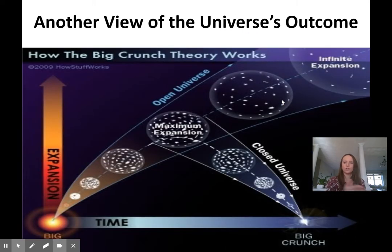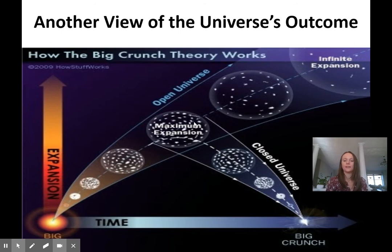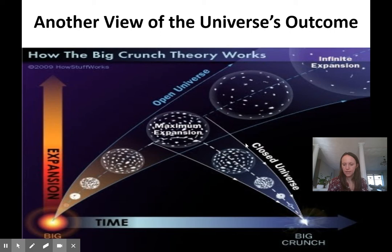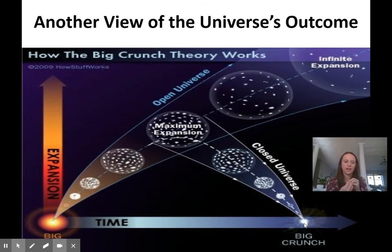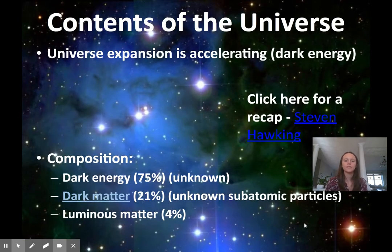Those three options are shown in graph form. An open universe shows expansion continuing over time. In a closed universe, you can see how we hit a point of maximum expansion and then everything begins to close back in on itself — that's called the Big Crunch theory. That could actually lead to another Big Bang, because you've pushed everything back together and increased temperature and pressure again, potentially leading to another expansion.